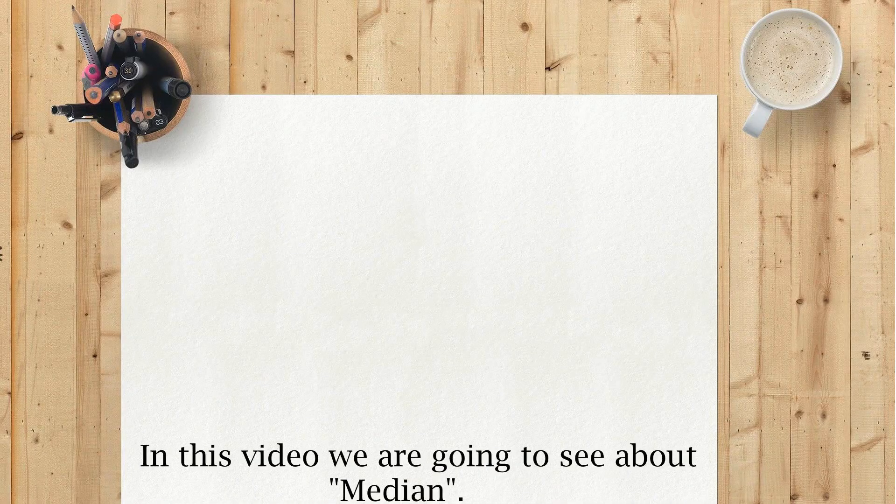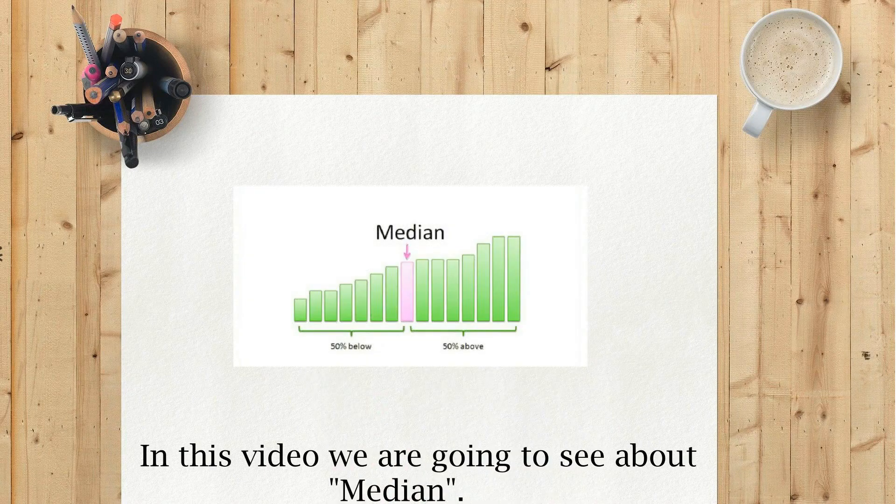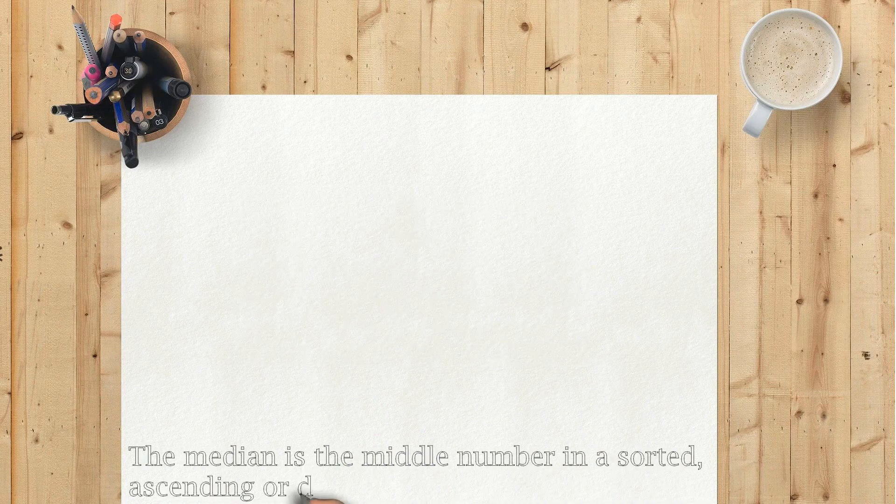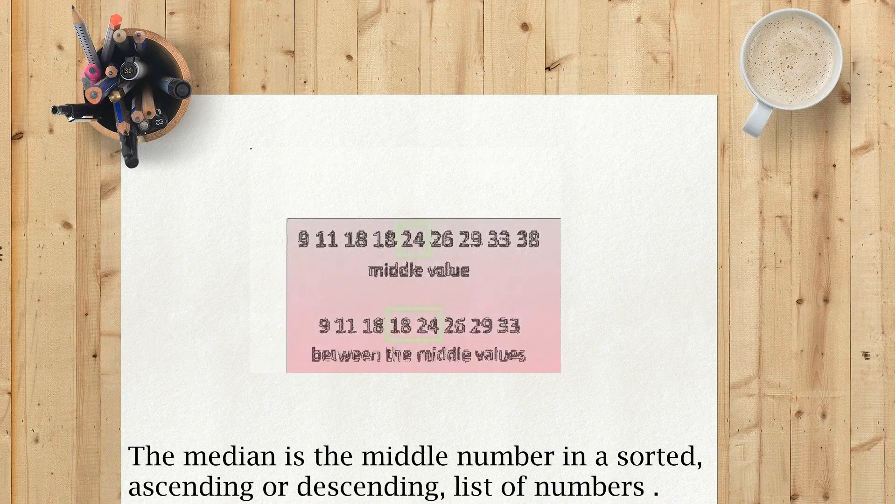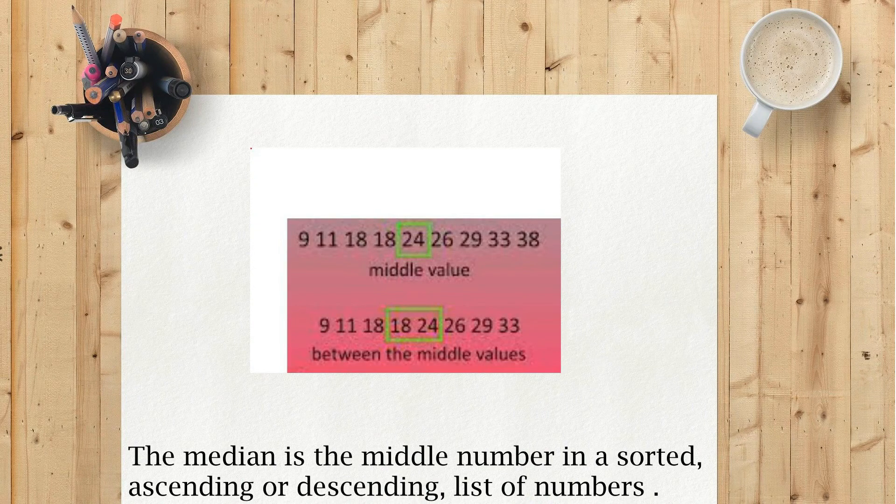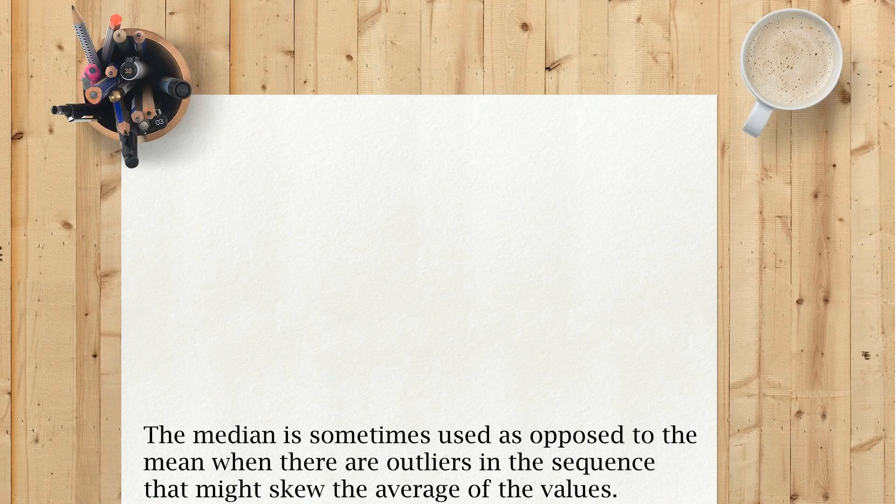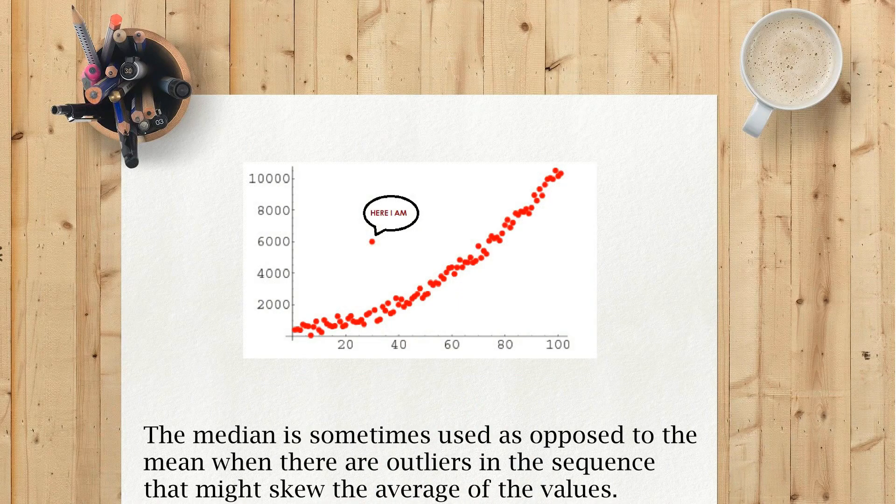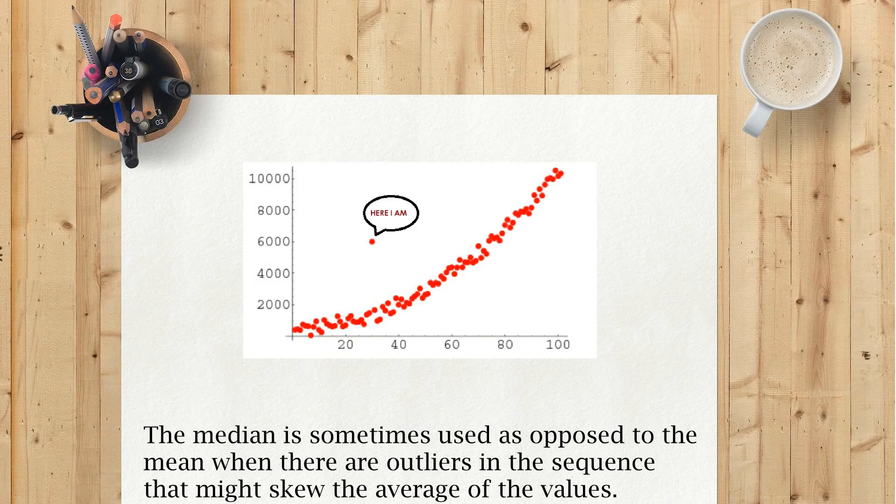In this video, we are going to see about median. The median is the middle number in a sorted ascending or descending list of numbers. The median is sometimes used as opposed to the mean when there are outliers in the sequence that might skew the average of the values.